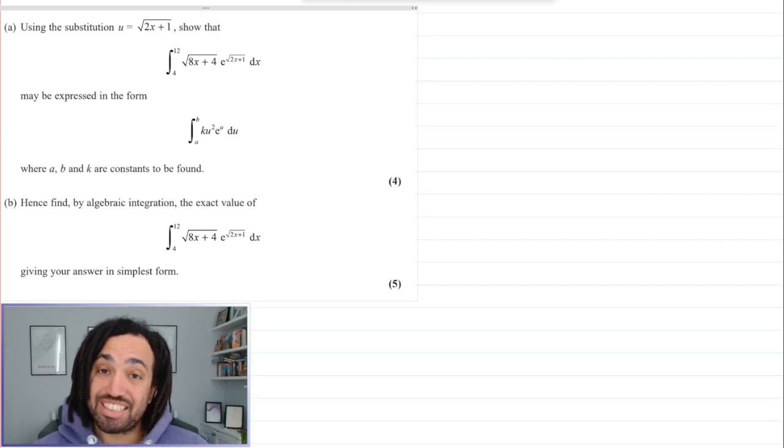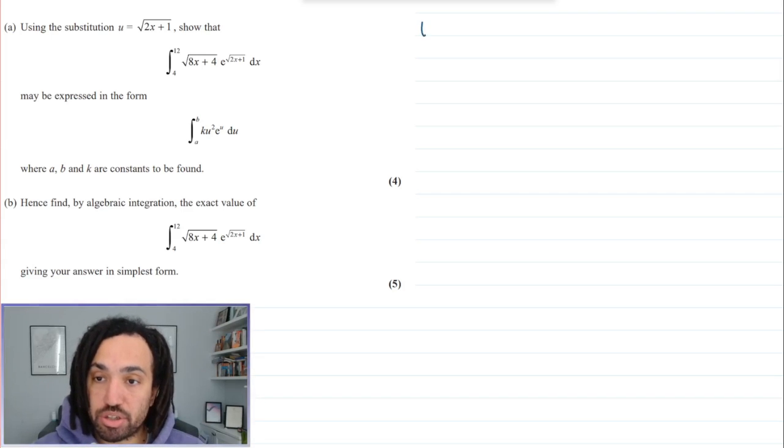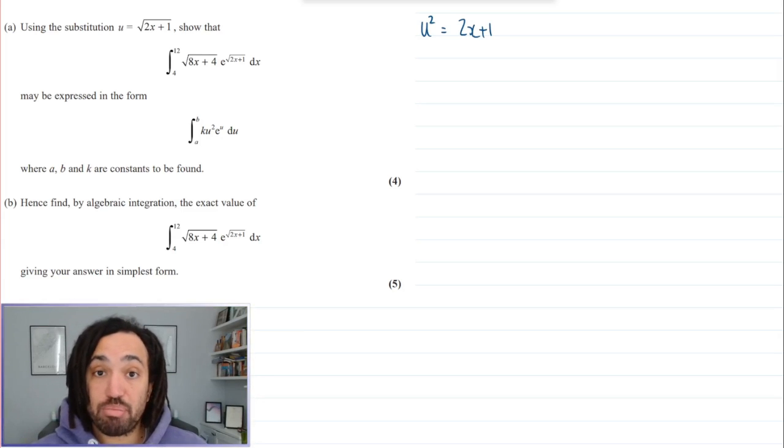Hello my name is Mr Asprey and this is another tricky question on integration by substitution. Now the tricky part is right at the start, so what I would always recommend is to square my substitution if there is a square root involved and then differentiate implicitly.